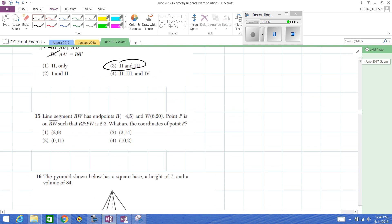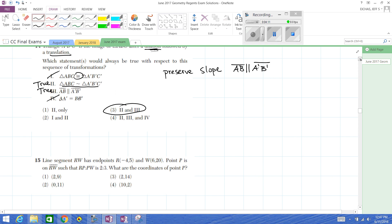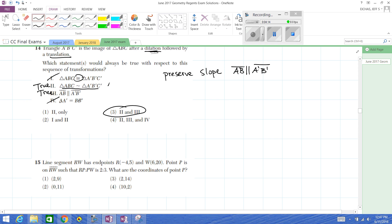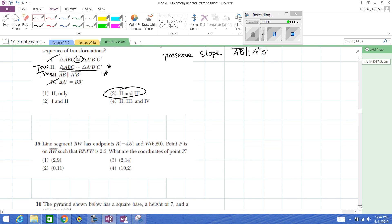Back to number 14. They accepted many different answers on this. But the intent of the problem really was to go similar and parallel, right? Technically these other ones should have been eliminated. A translation would preserve this, but a dilation shouldn't always. Sometimes it does. And congruence, really we should lose that. So it was intended to be choice three. But they did accept multiple answers I believe for that.